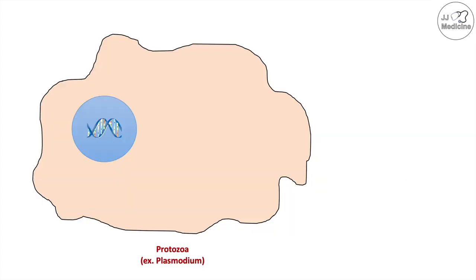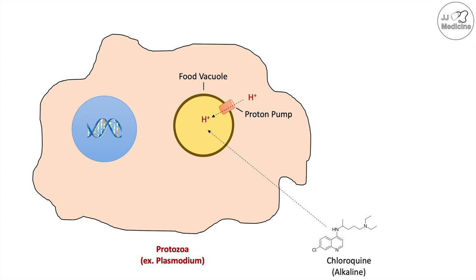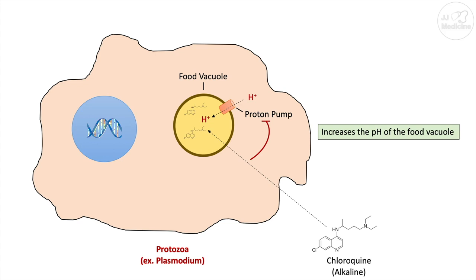So what is the mechanism of action of hydroxychloroquine and chloroquine in a protozoa like plasmodium? Plasmodium, like other protozoa, have a food vacuole — something they use to digest nutrients. These food vacuoles have a proton pump that brings in hydrogen ions, acidifying the food vacuole. Chloroquine and hydroxychloroquine are both alkaline, so when they enter the protozoa and the food vacuole, they alkalinize it and can also inhibit proton pump function. This increases the pH of the food vacuole, preventing it from digesting the nutrients required for the protozoa. It essentially starves the protozoa by increasing the pH, preventing proper nutrient digestion.